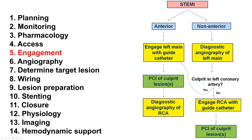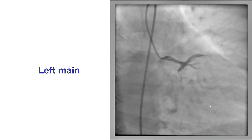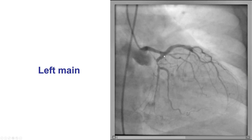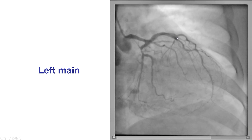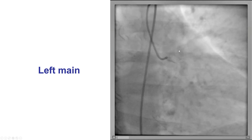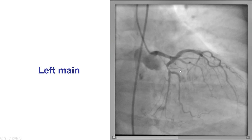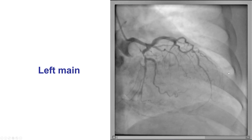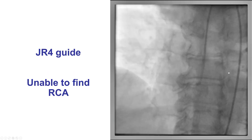For example, if it's an RCA with three-vessel disease and left main that will eventually require bypass, we might do balloon angioplasty only of the culprit lesion, and then the patient may subsequently go for coronary bypass graft surgery. So in this case, we first did the diagnostic angiogram of the left main. There are lesions in the circumflex and the LAD, but there's no culprit lesion here.